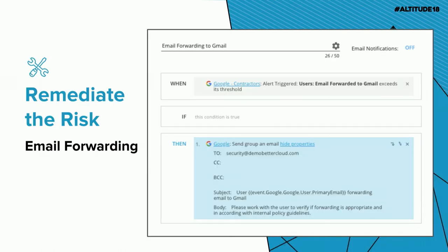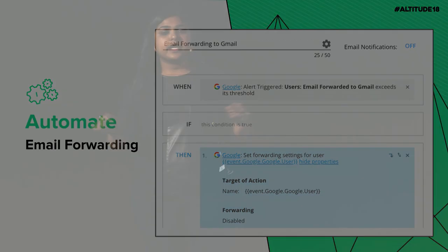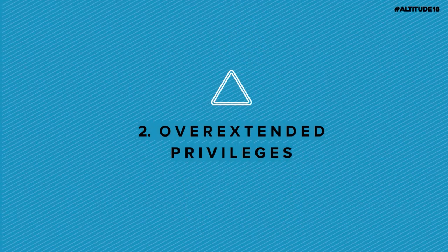To remediate, you can set up a simple workflow using any of those alerts to send you or your security team an email the moment email forwarding is enabled. To automate that, take the workflow one step further — use that same alert and add an action that automatically disables email forwarding any time you see it.